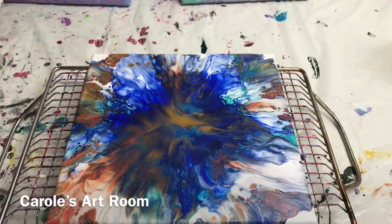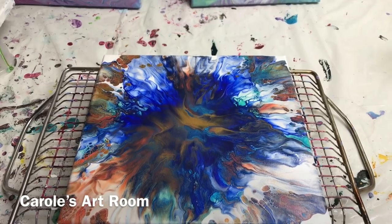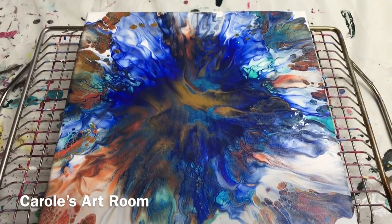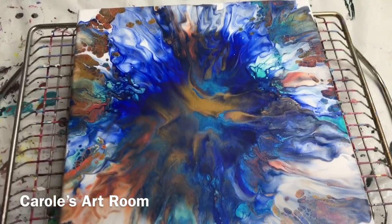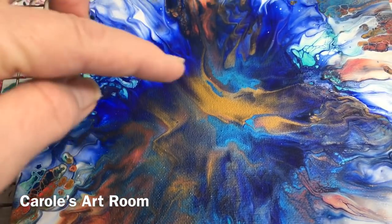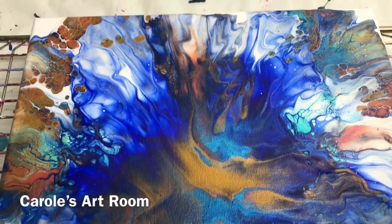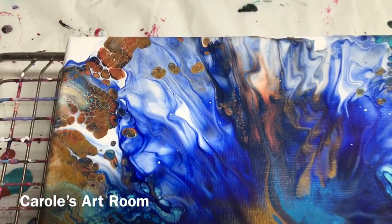All right, here's my dried Dutch pour. Still a little wet in the middle - there's just a couple of little spots there and one over there where the paint was a bit thicker, but all in all it's dried really nice.